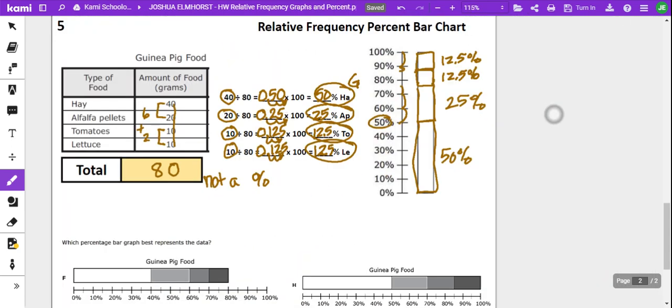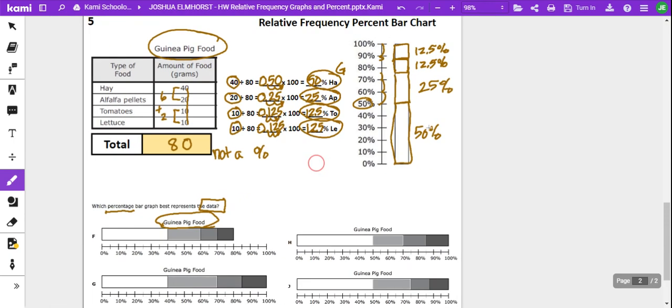Now, if you go down below, you're going to see which percent bar graph represents this data up above. So we have the guinea pig food, guinea pig food, so we're talking about the same thing here. So the biggest one is 50%.